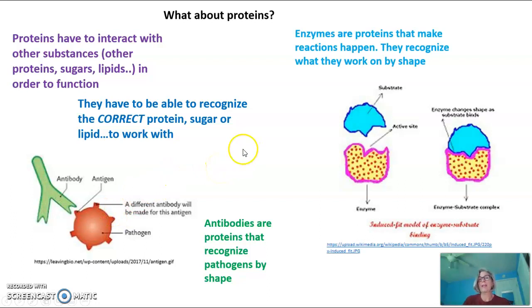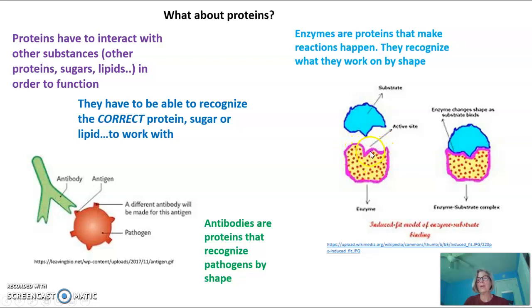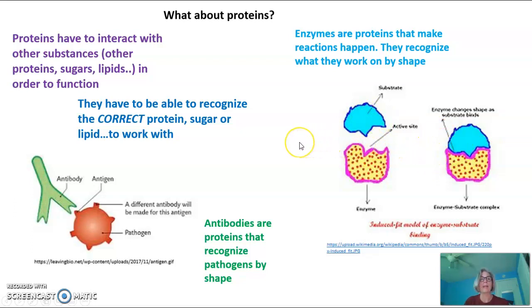Enzymes are also proteins, and they are proteins that make reactions happen. They recognize what they work on by shape. This pink and yellow molecule here would be the enzyme, and it has a very specific shape in what's called its active site. It's this shape that's going to recognize the molecule it's going to work on. That molecule would fit exactly into the shape of the enzyme so that the enzyme could make the reaction happen.